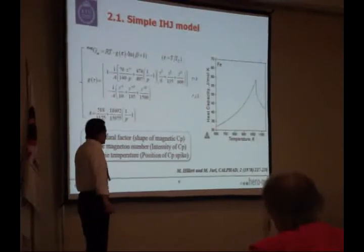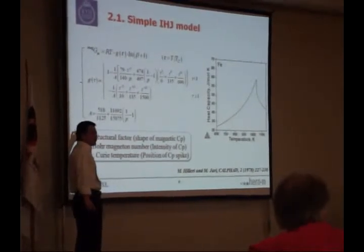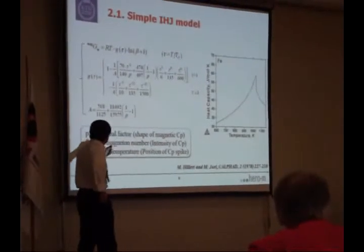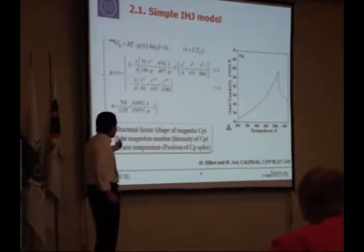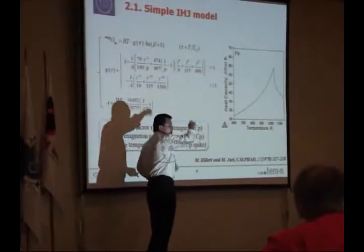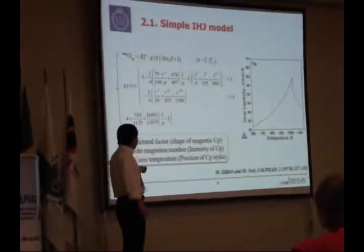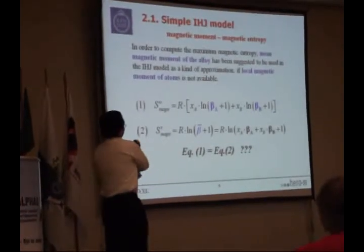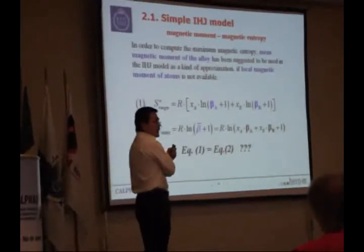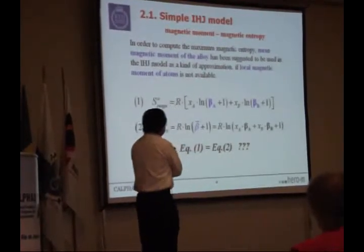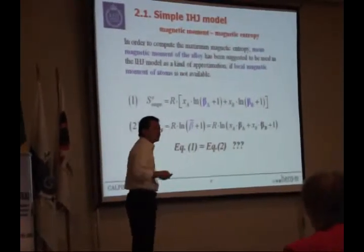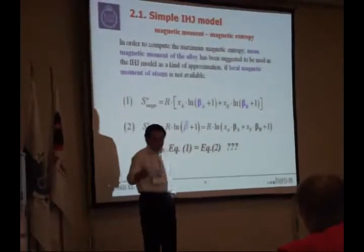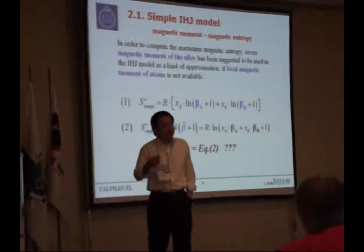However, I do remind you again that there are three parameters which are very important. The first one is structure factor, which determines the shape of magnetic CP. If you have one magnetic moment, of course, it will dominate the intensity of the CP. Of course, for TC, it will choose the position of this CP spike. So, in the original model written by Hillert, of course also in this paper, then they suggest if you cannot find a local spin magnetic moment, then you could probably choose this expression which has input as average or mean magnetic moment to calculate the magnetic entropy.